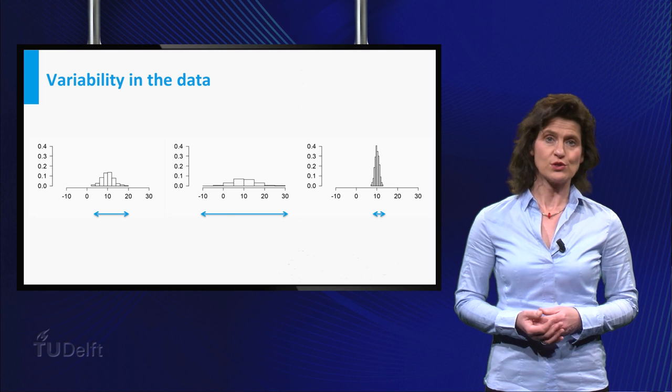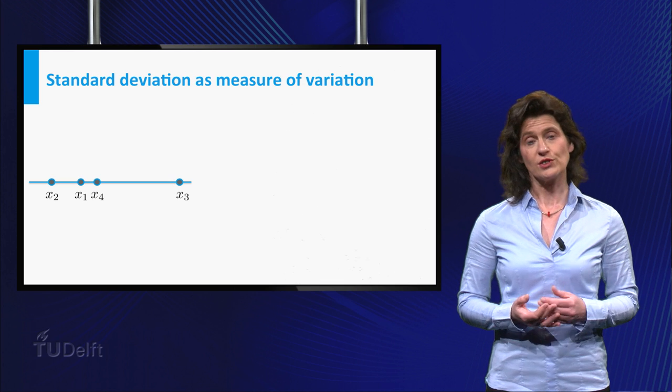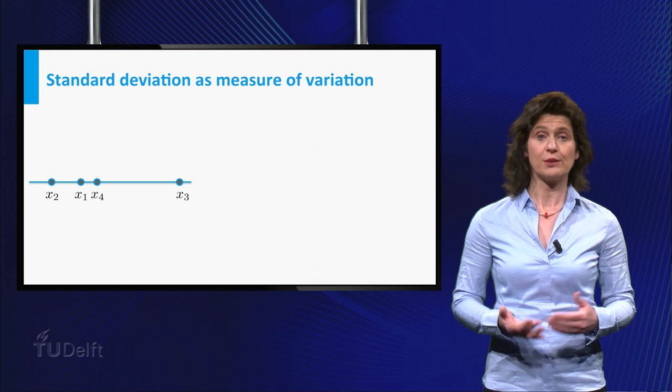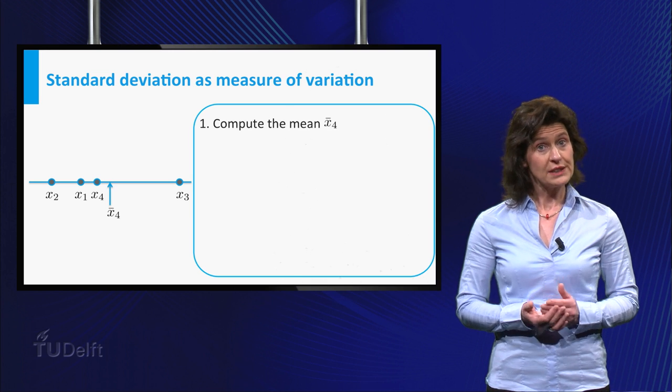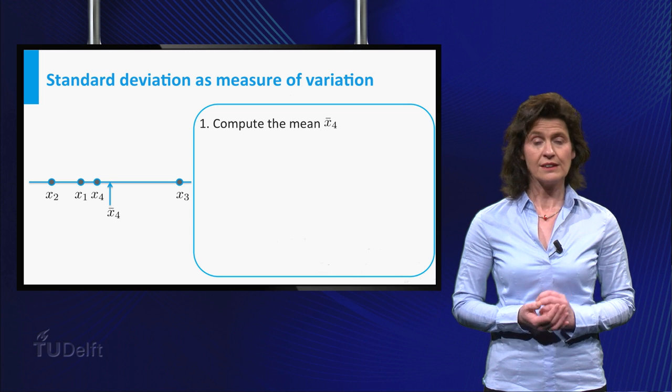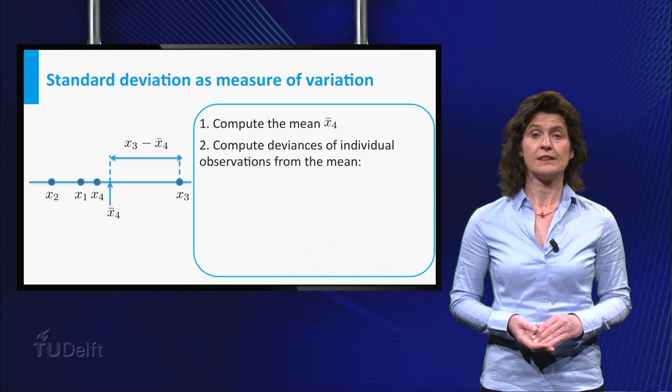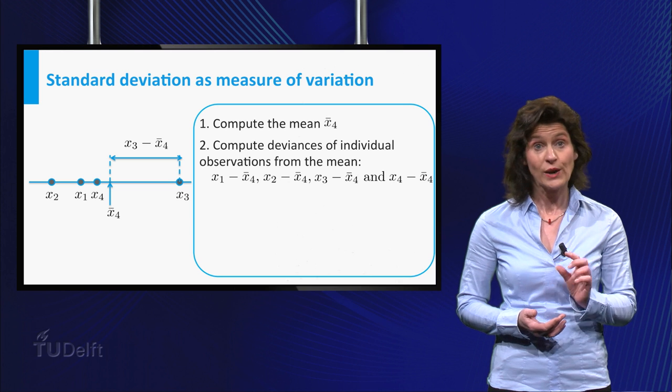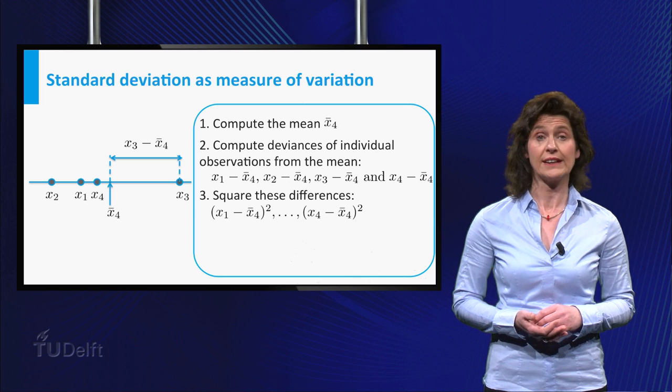The most commonly used measure of spread is the standard deviation. It is constructed in a couple of steps. Consider an example with four data points visualized here. First, compute the mean of the data. Then, for each individual data point, compute the difference with the mean, yielding in our example four differences. Then, square these differences.